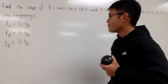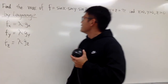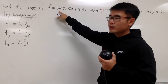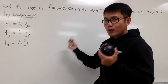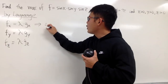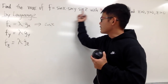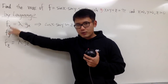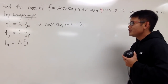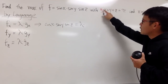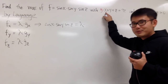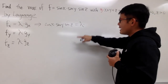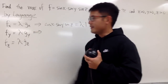Let's get to work. For f sub x, treat x as the variable and the other two as constants. The derivative of sin x is cosine x, and sin y and sin z stay as constant multiples, so f sub x equals cosine x times sin y times sin z. And lambda times g sub x: the derivative of x with respect to x is 1, and the derivatives of y and z with respect to x are 0, so g sub x is just 1. That's the explanation — now we'll speed up for the rest.